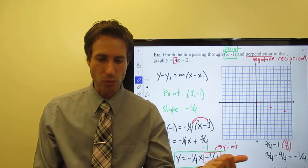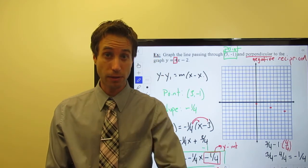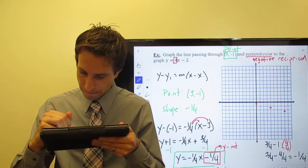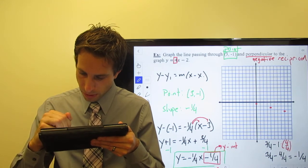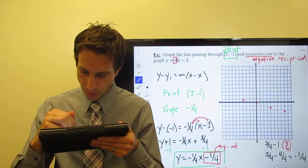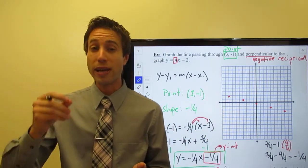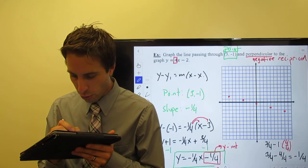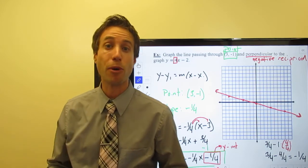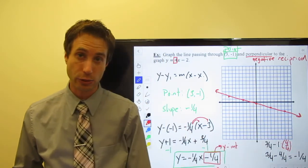Instead of going down one and right four, I could go up one and left four — that's the exact same thing. Up one, then one, two, three, four — right about there. Let's do it again: up one, right about there. Connect those points with a line and make sure you extend your line all the way through the coordinate plane. Put arrows on both ends so I know you know that line just keeps going to infinity — don't just give me some short little line. All the way through, slope-intercept form.